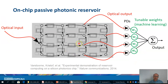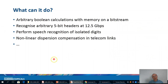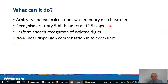Why is this chip needed if we already have a machine learning system at the readout? First, let's see what this system can do. It can perform arbitrary boolean calculations with memory on a bitstream, recognize arbitrary 5-bit headers at 12.5 gigabit per second, perform speech recognition of isolated digits, and also nonlinear dispersion compensation in telecom links — and you can train it to do other things as well.